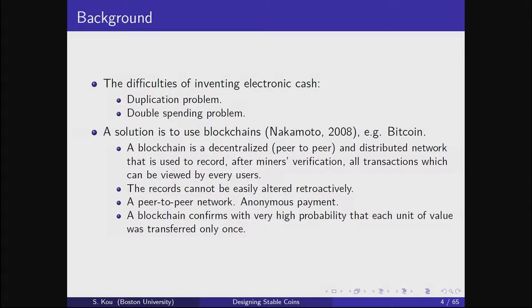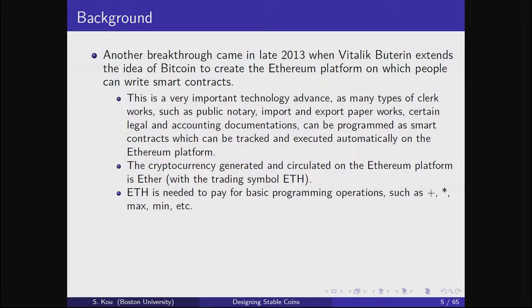Another breakthrough came around late 2013 when Vitalik Buterin invented the Ethereum network, on which you can write smart contracts. That's a big thing because now you can do blockchain programming using, for example, Solidity language. This could potentially help with public lottery, legal work, and more. Importantly, every operation you write in blockchain code — plus, minus, min, max, etc. — you need to pay in Ether. In other words, these become endogenous; you cannot separate the Ethereum network from the cryptocurrency anymore.